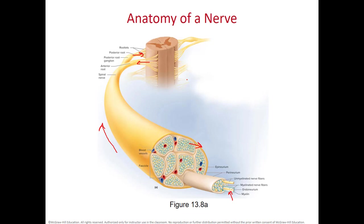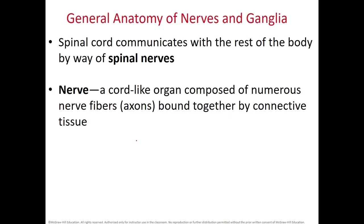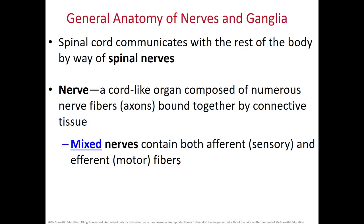Remember the vertebra is not shown in this diagram. Everything inside the vertebra we call roots, and outside those are rami — the largest ramus is your spinal nerve. A nerve is an organ composed of many axons bound together by connective tissue. They are mixed, containing both sensory and motor axons.